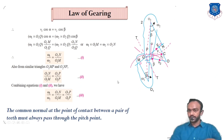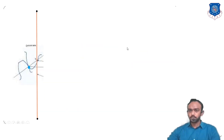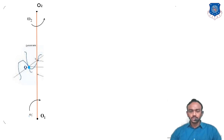This is the derivation for the law of gearing. We will derive the statement step by step — it is very easy, you only have to understand the geometrical relation between two gears. Check these two gears: their centers are O1 and O2, connected by a line. Q is the contact point between the two gears, rotating with angular velocities omega 1 and omega 2.